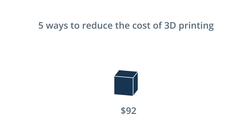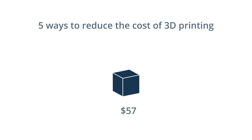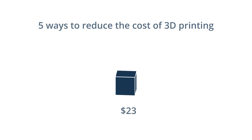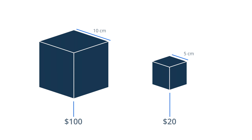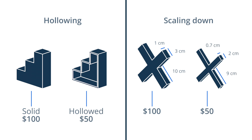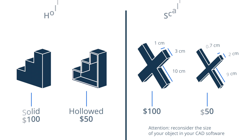There are a few tricks related to designing, manufacturing, and post-processing parts that can help you reduce the cost of 3D printing. Number one: use less material. 3D printing project costs mostly depend on the amount of material used to print the part. That's why hollowing, scaling down your model, and eliminating any unnecessary features can significantly reduce production cost.